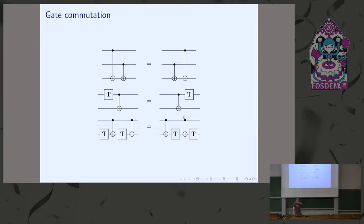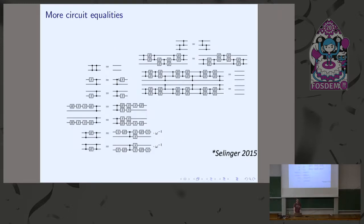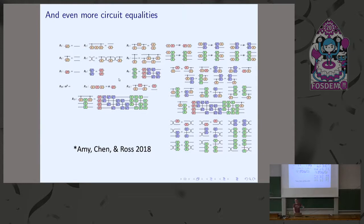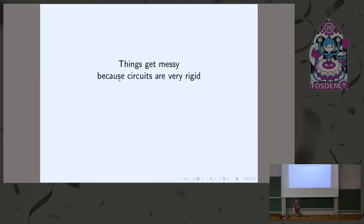Some operations commute past one another — if you have two CNOT gates that put a NOT on the same qubit, it doesn't matter in which order you do them. Combining cancellations and commuting, you can see how simplifications add up. People have been finding more elaborate lists of simplification rules, but this gets unwieldy very quickly. The reason you need so many rules is because the structure of a quantum circuit is very rigid: it has a definite time ordering, a definite number of qubits. This is where we use ZX diagrams to overcome this problem.